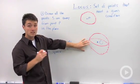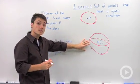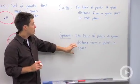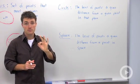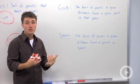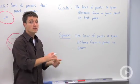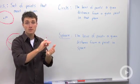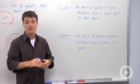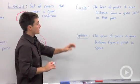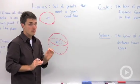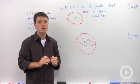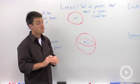So what we've drawn here is a sphere. That's the definition of a sphere, which is related to a circle, but a sphere is talking about three dimensions. It's the locus of points that are a given distance away from a point in space — the three dimensions that we live in. So the key concept here is that a locus is all of the points that meet a given condition.